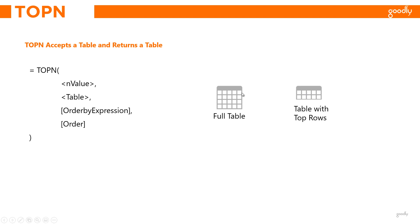In the TOPN function you can write an actual physical table from your data model — such as the sales table, calendar table, or products table — or you can write a table that you have created using a DAX expression. Let's spend more time in Power BI and take a look at how TOPN works.